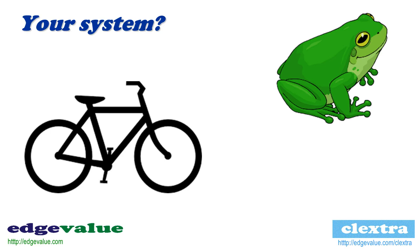All of this happens in the design and prototyping phase, before you really get into the system at all. A key aspect of any IT or ICT architecture is to identify whether it's a bicycle-like system or a frog-like system before you even get started.